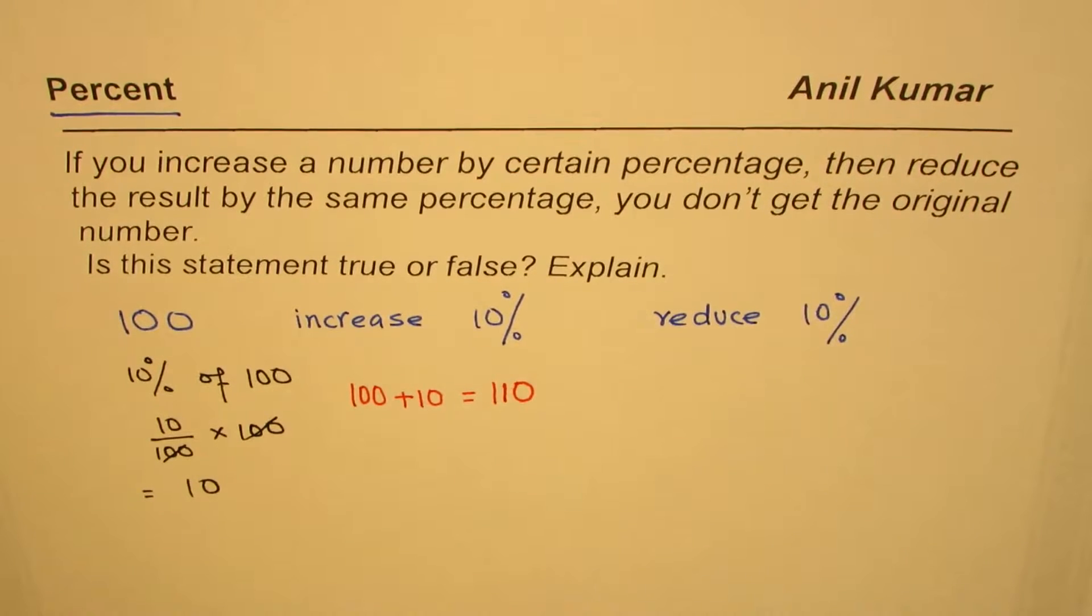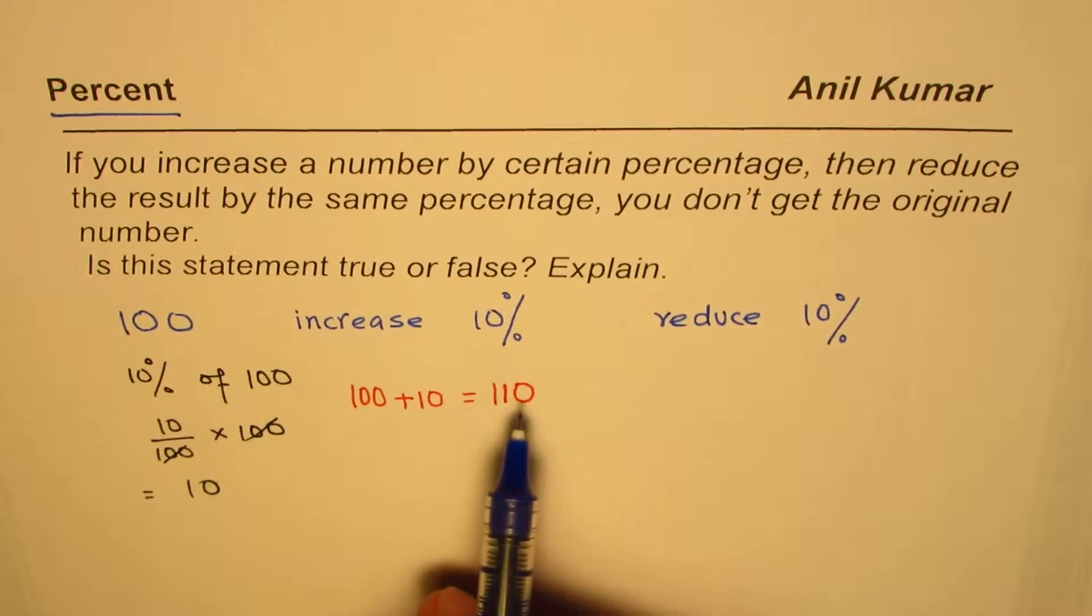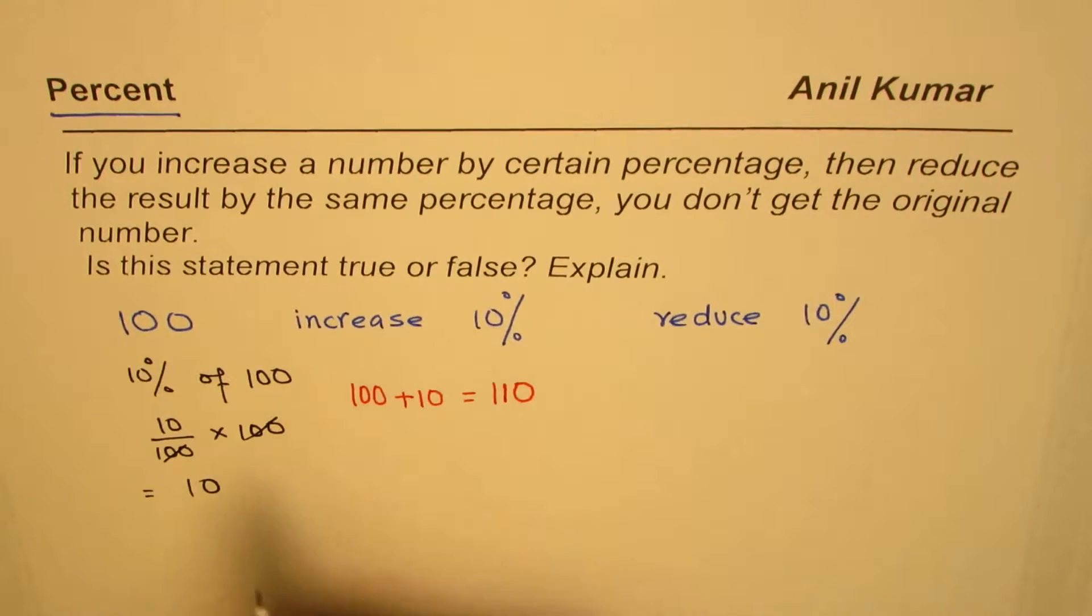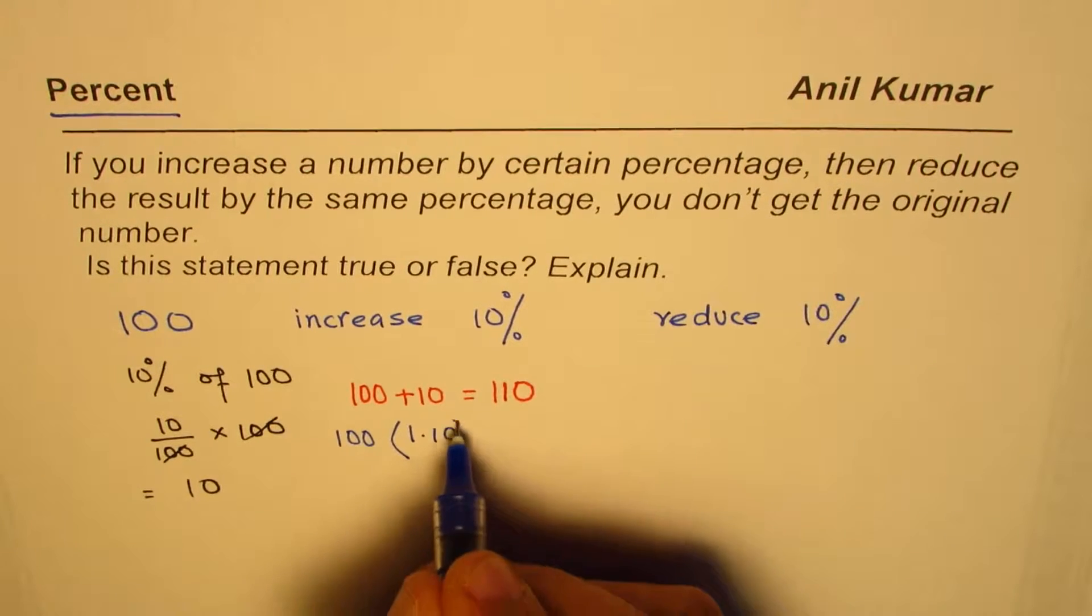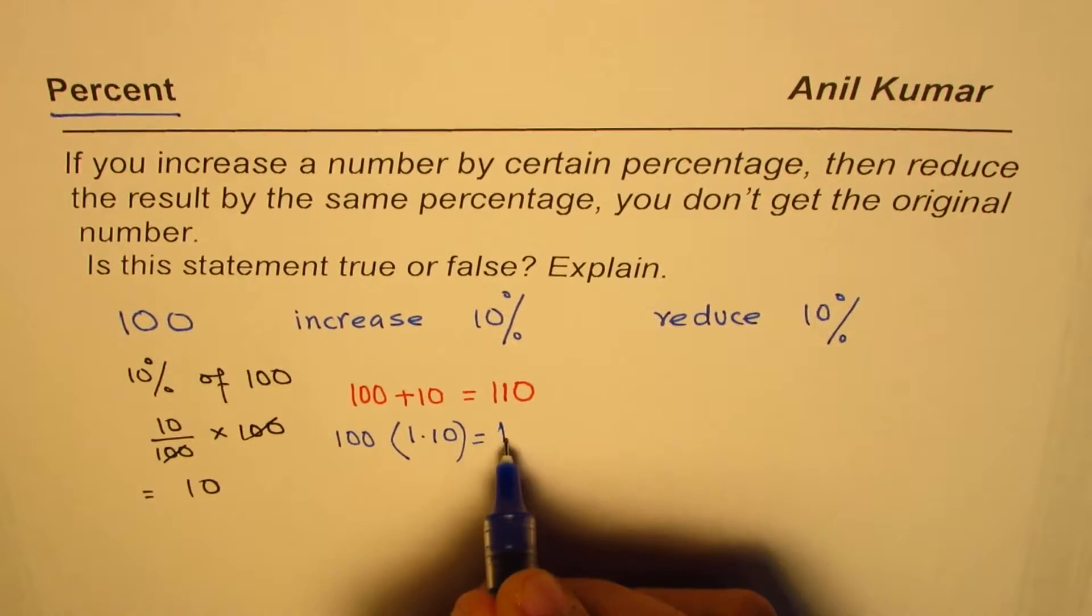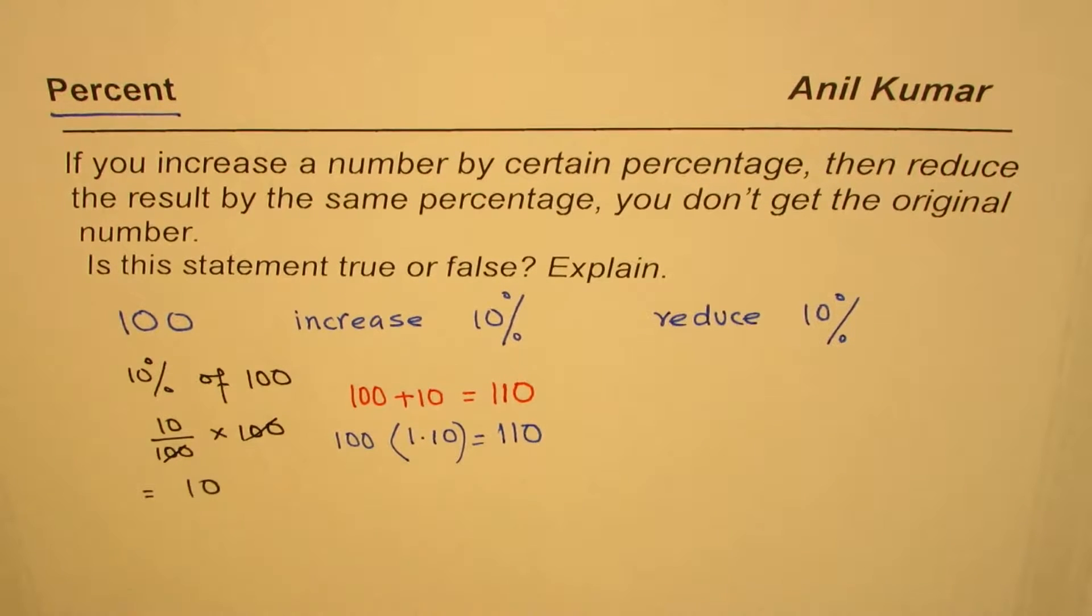Some of you could have calculated directly: 100 increased by 10 percent really means 100 times 1.10, so you get the same result, 110. Now what we have to do is reduce by 10 percent.